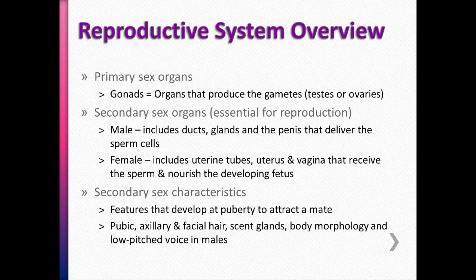Secondary sex characteristics are not the same as secondary sex organs. These are characteristics that show up at puberty and are believed to attract a mate — basically making others aware that this person is now ready to produce offspring. Things like pubic, axillary, and facial hair in males, scent glands, and during adolescence you start producing more hormones, which cause production of more pheromones.